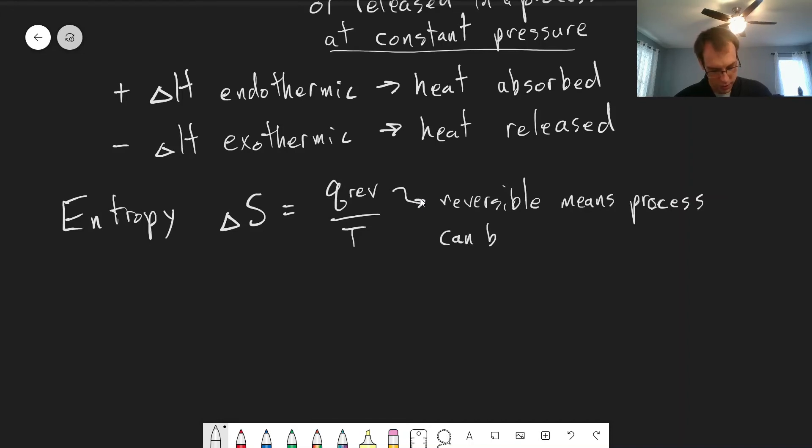So a process can be reversed. Most processes we consider are not reversible, but the entropy is defined in terms of this reversible condition. So reversed by a small change in the surroundings or in the conditions.